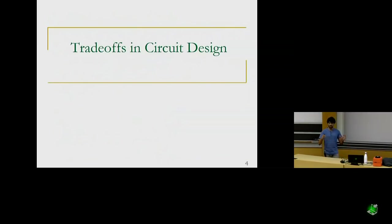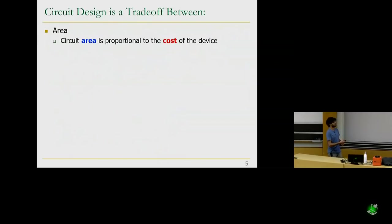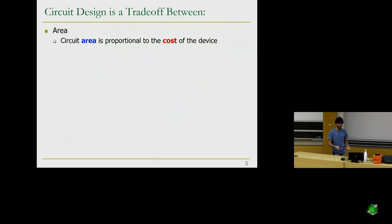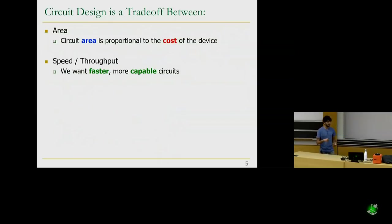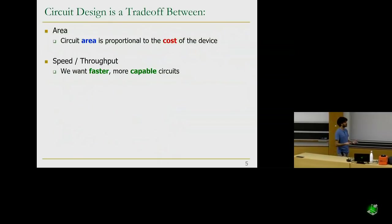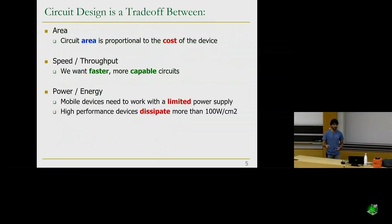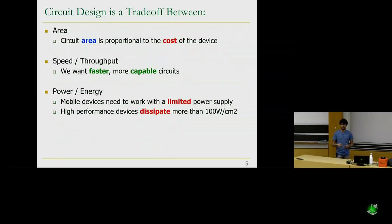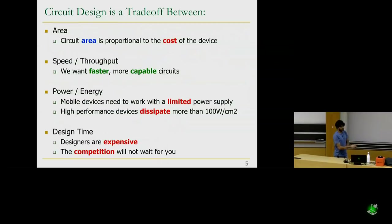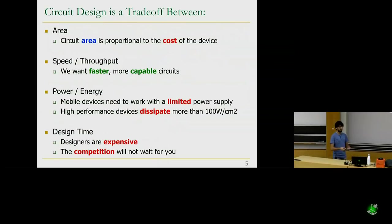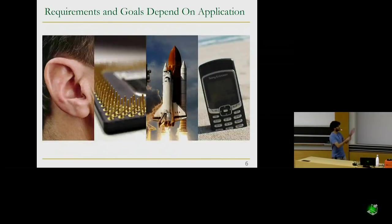Today we'll cover timing in combinational circuits, timing in sequential circuits, and circuit verification for both. We'll start with trade-offs in circuit design. The first is area, which is proportional to the amount of circuitry and reflects the cost of the device. You might care about speed and throughput, which reflect performance. Power and energy matter for mobile devices and high-performance designs. Finally, design time is subtle but important — engineering designers are expensive and competition won't wait for you to finish.